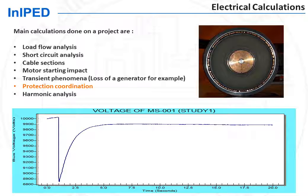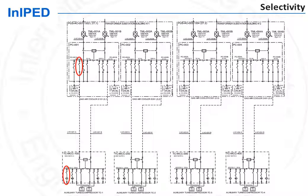Another important calculation required for commissioning is the Protection Coordination Study. It defines the settings of protections in order to ensure selectivity. Selectivity means that the protection of individual consumers will operate first before any higher-level protection. For instance, if there is a short circuit in a particular pump, the protection of that pump only will operate, and not the protection of the higher level of the electrical distribution system. Therefore, the power supply will be cut only for this particular pump and not for other consumers.